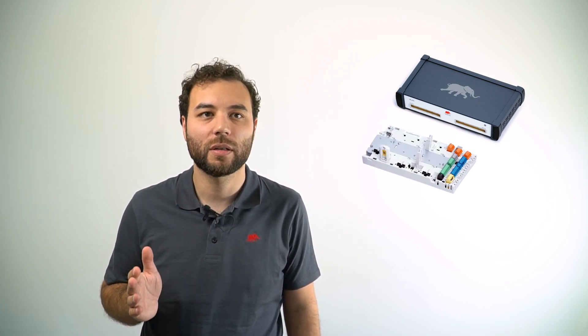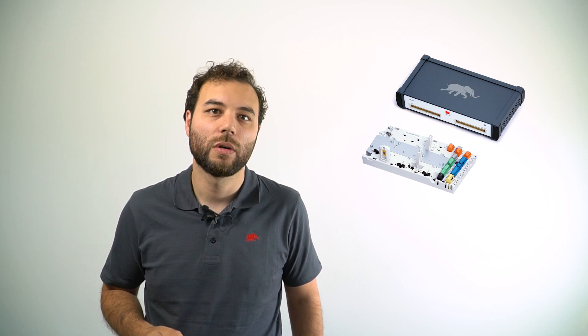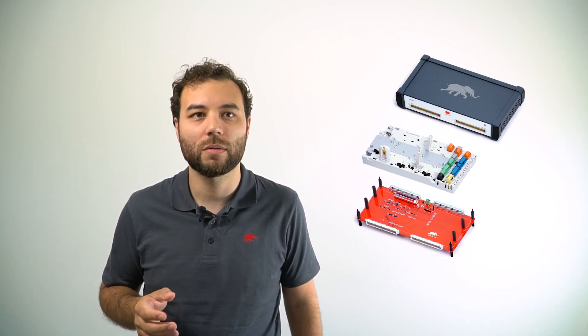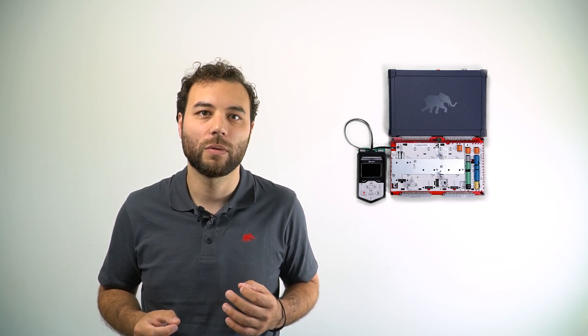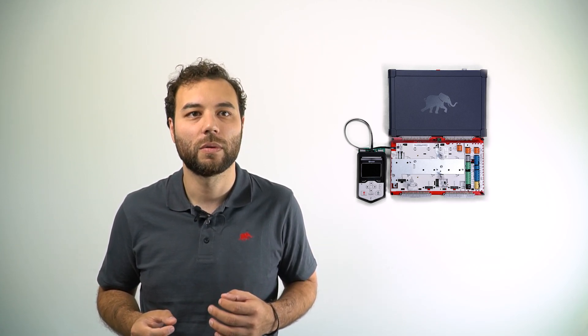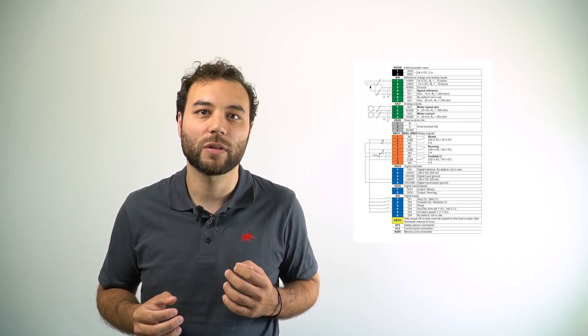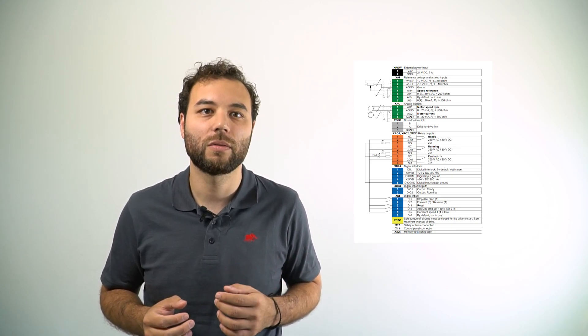Let's take a look first at the setup we'll be using and then at the motor drive model that we'll be simulating. Our test bench will use our 200 nanosecond time step Typhoon HIL 404 real-time simulator, an ABB ACS 880 industrial motor drive ECU, and an interface board specially designed to scale the required analog and digital interface between the HIL device and the motor drive controller. The ECU is configured for external control with factory macro enabled. Start-stop, direction, and reset commands are accessed through the controller's standard IO interface directly connected to the HIL outputs.